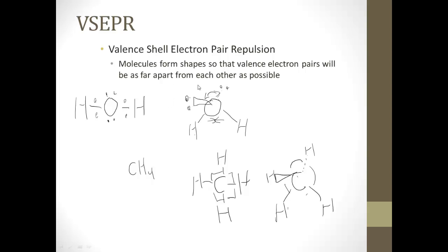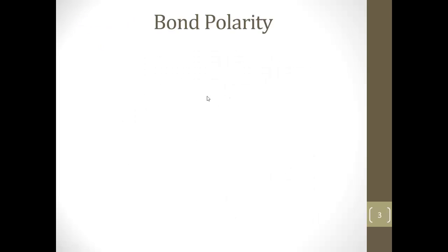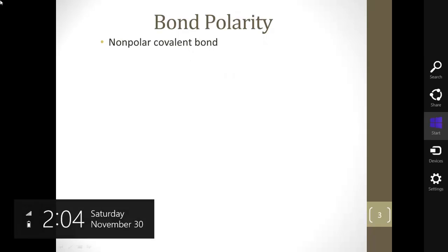The key important thing to remember is opposites attract, but like charges repel. Since there's a pair of negatively charged electrons, they get as far away as possible from one another. This brings us to what's called bond polarity. So far we haven't talked about how the sharing really works.